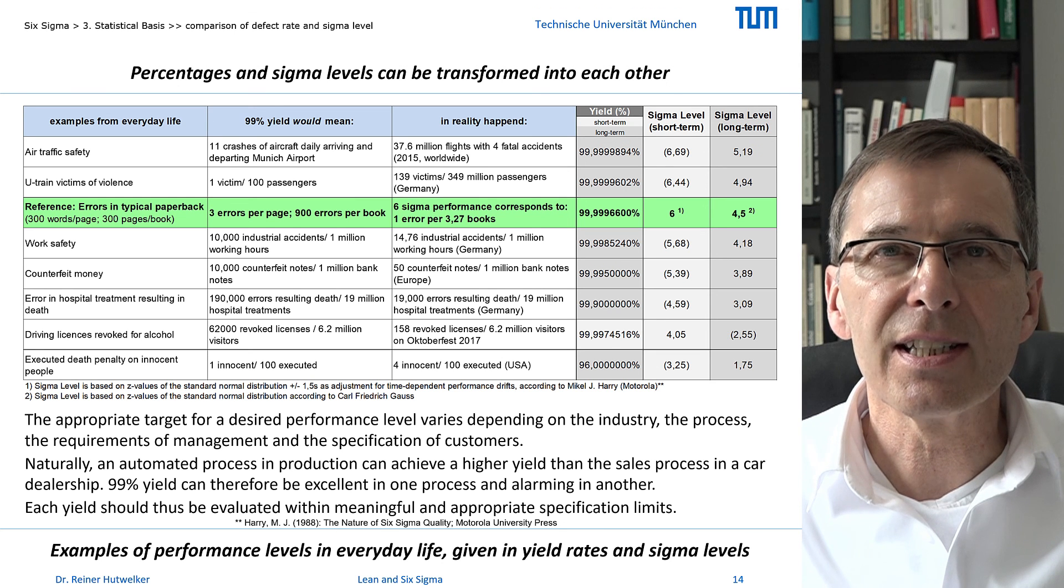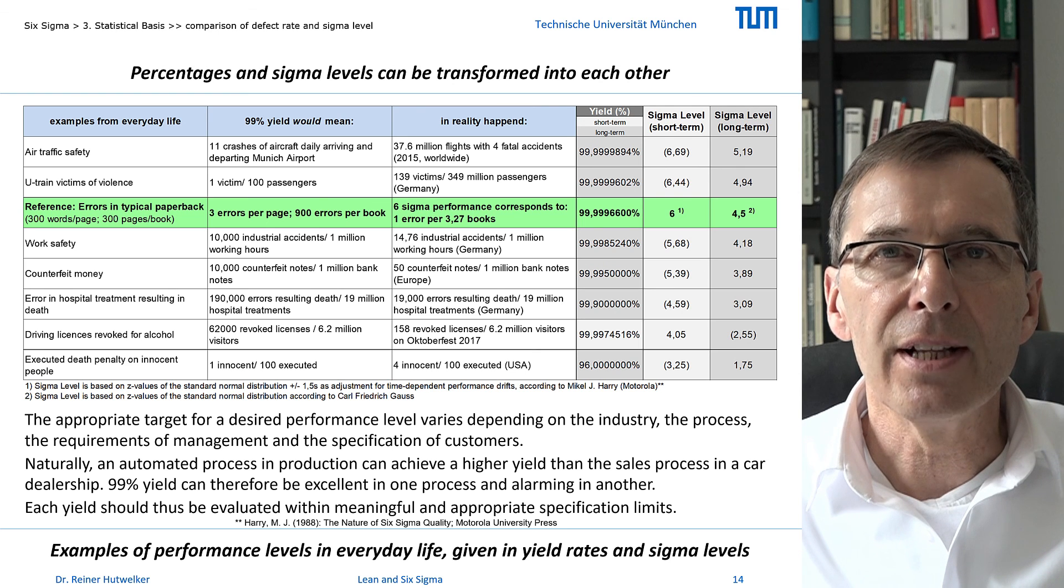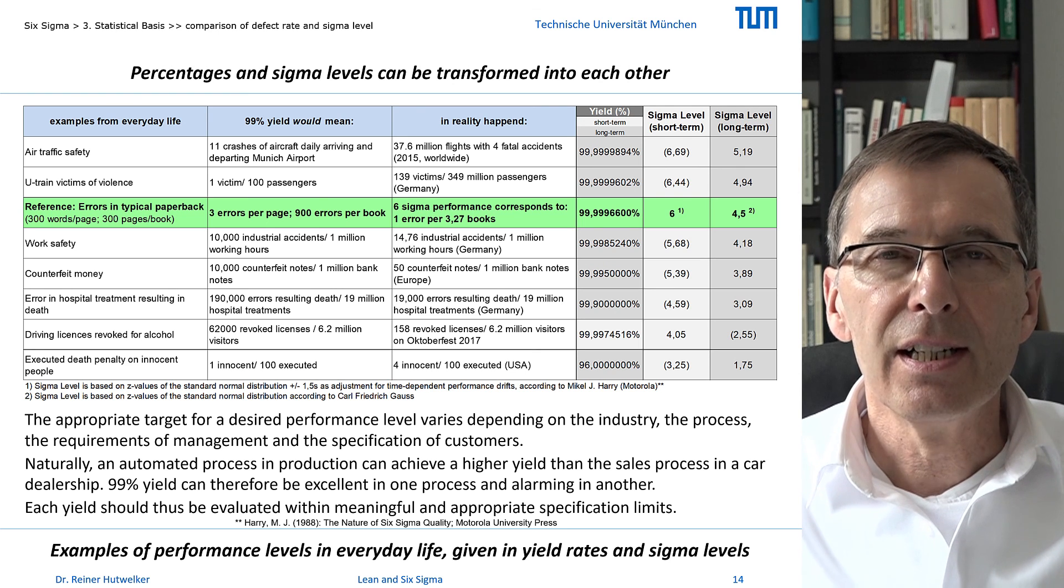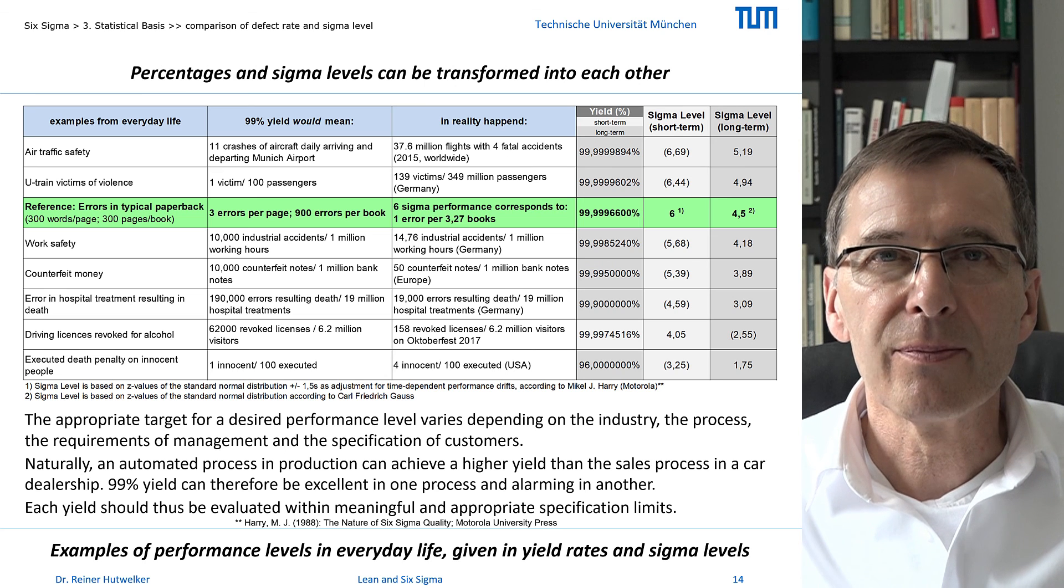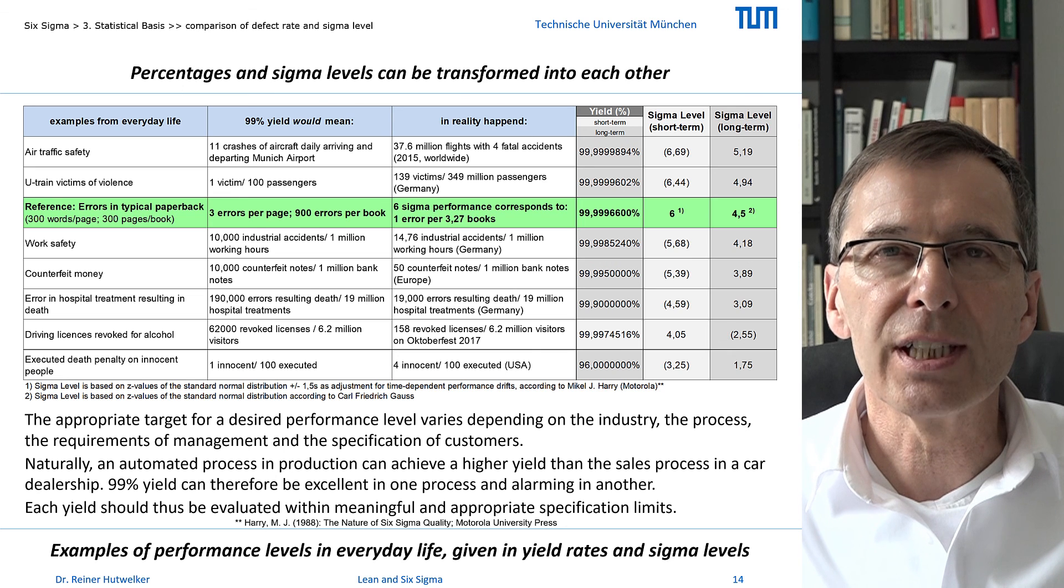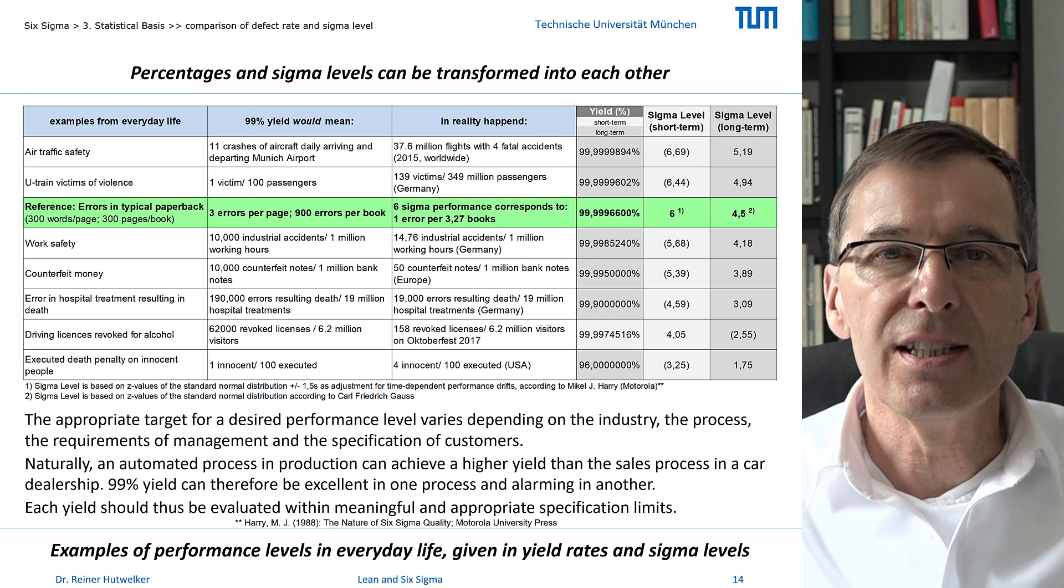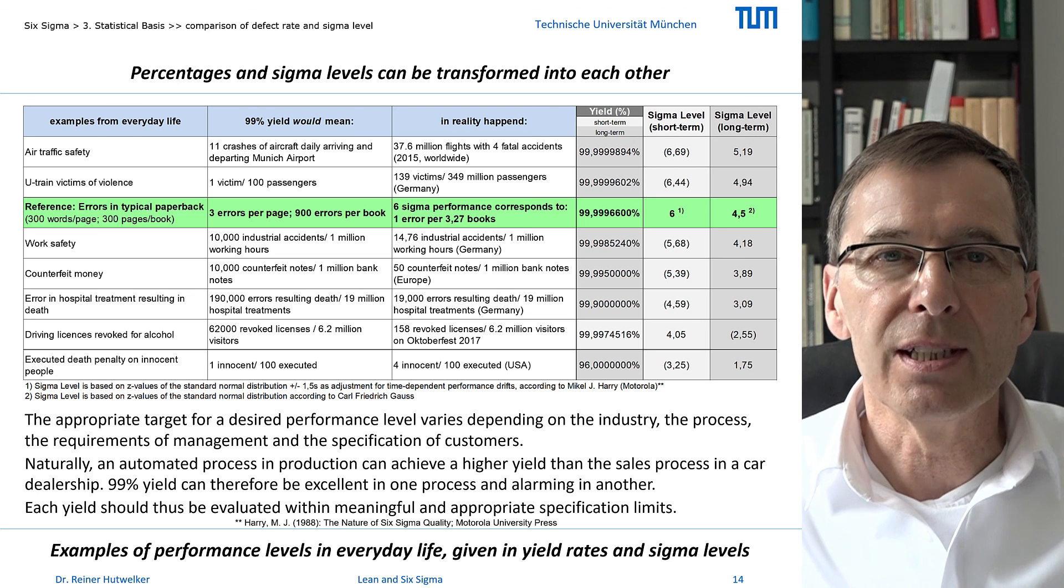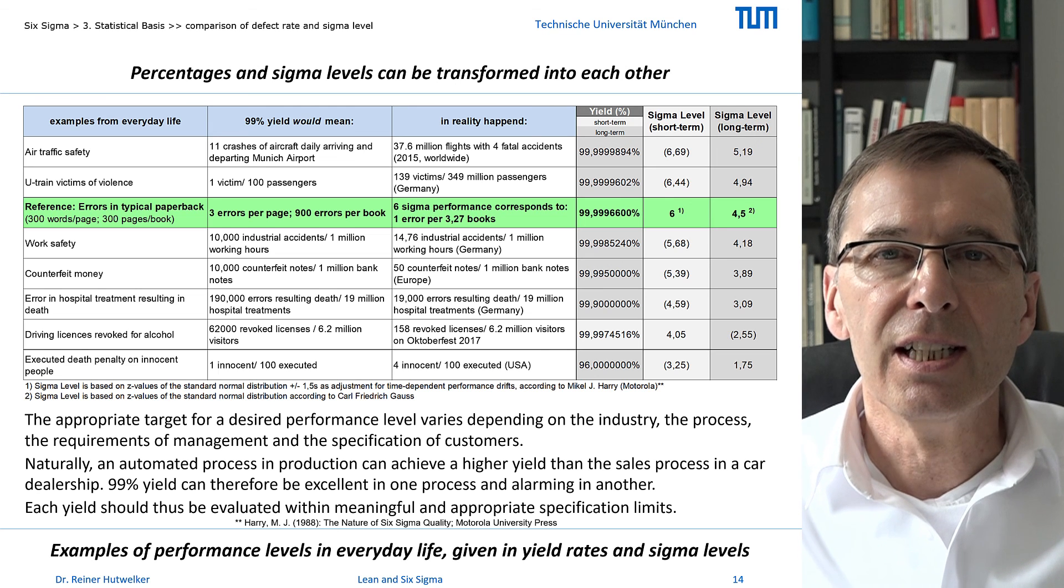What is the appropriate target sigma level for your process? The typical level at the beginning of my project is between minus 1 and plus 3 sigma. Nothing to be ashamed of. The right target level for your project, however, depends on your process and your industry. Of course, an automated process in semiconductor production can reach a higher yield than the sales process in a car dealership. On the other hand, process capability depends on the specifications of your customer and the requirements of your company. 99% yield can therefore be excellent in one process and alarming in another.